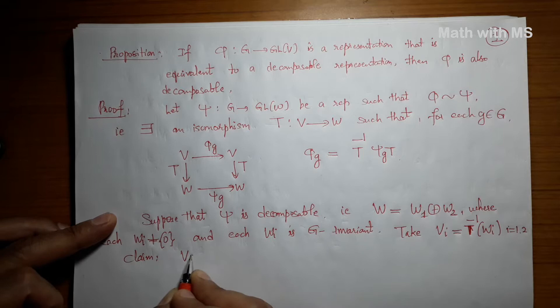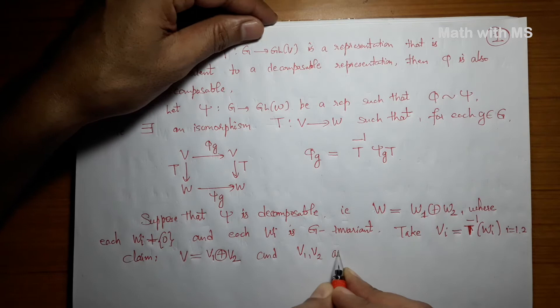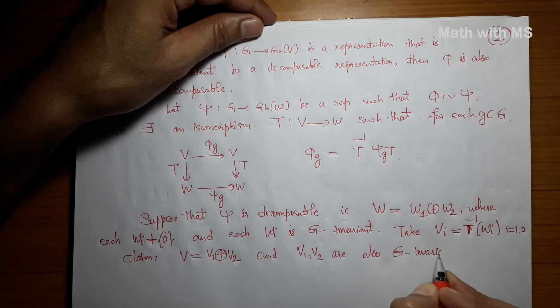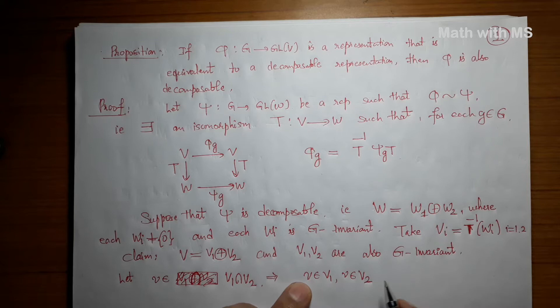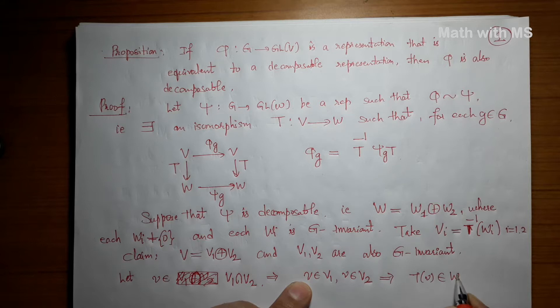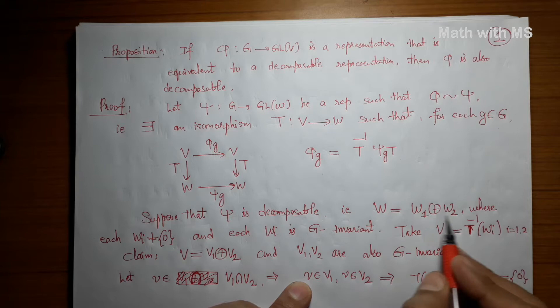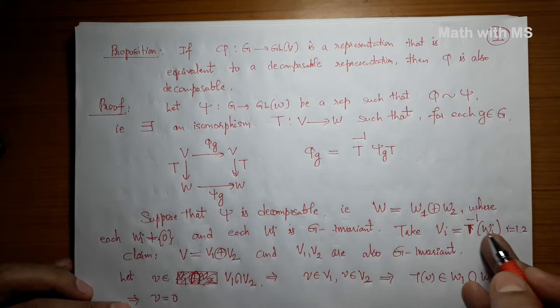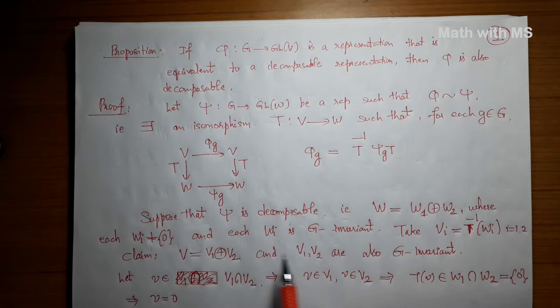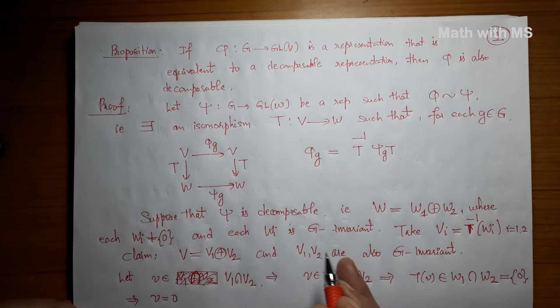The claim is that V = V₁ ⊕ V₂. Let v belong to V₁ ∩ V₂, so T(v) belongs to W₁ ∩ W₂. But W₁ ∩ W₂ is trivial since W = W₁ ⊕ W₂. Since T is injective, v must be zero, so V₁ ∩ V₂ is trivial. Similarly, V₁ + V₂ equals all of V: for any v in V, T(v) is in W₁ ⊕ W₂, and pulling back gives the decomposition.